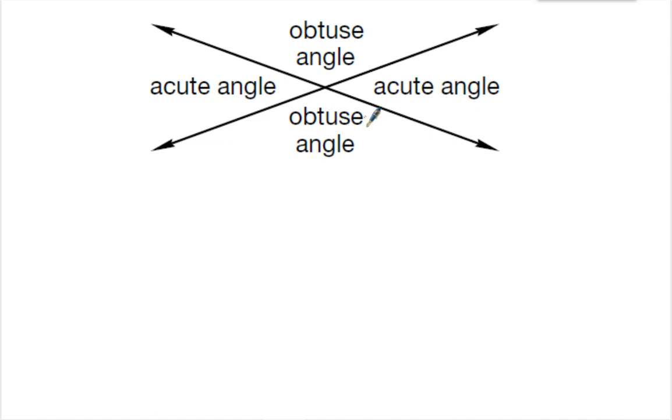Obtuse angles are angles that are bigger than 90 degrees. So bigger than 90 degrees, that's obtuse.